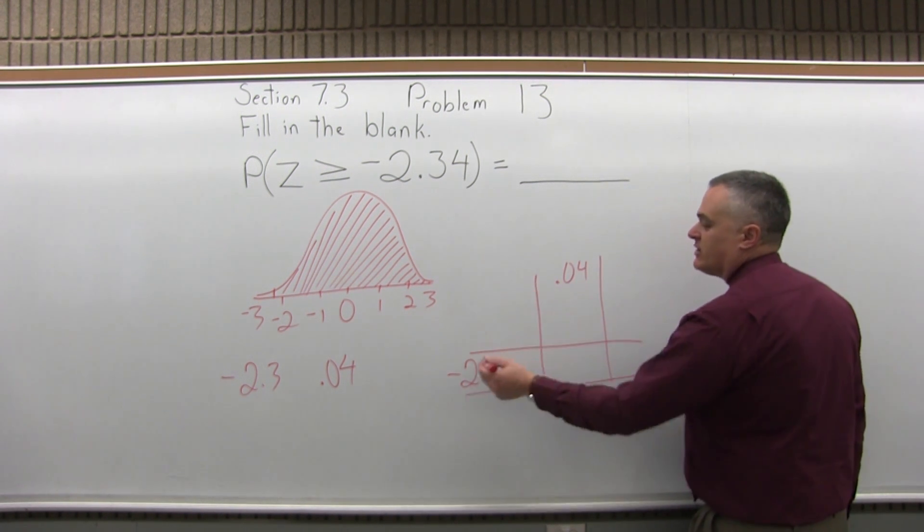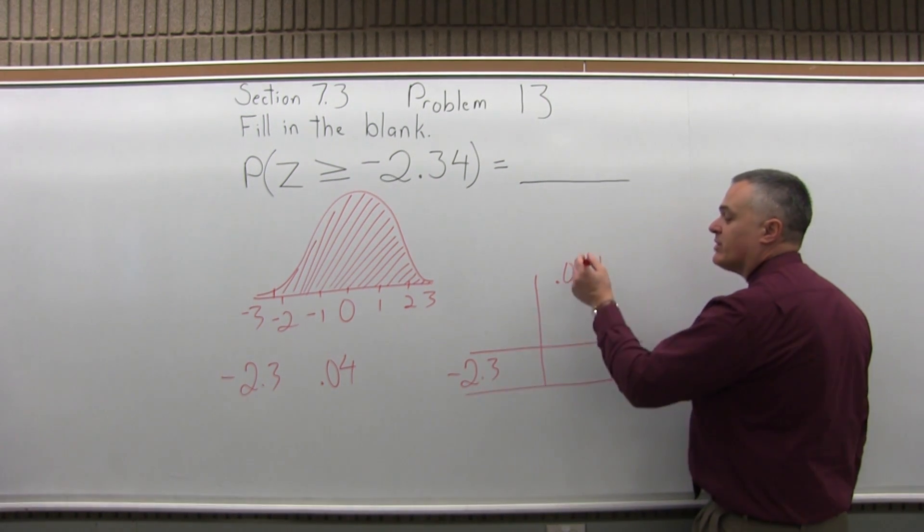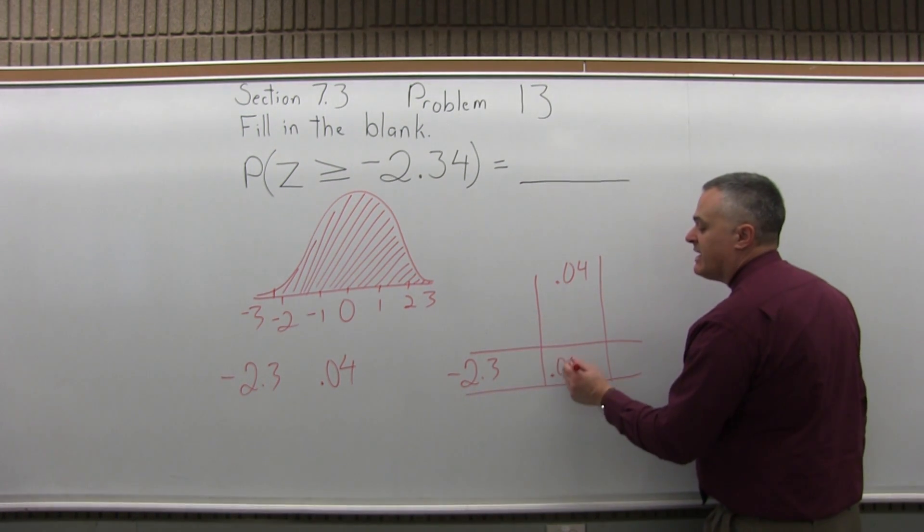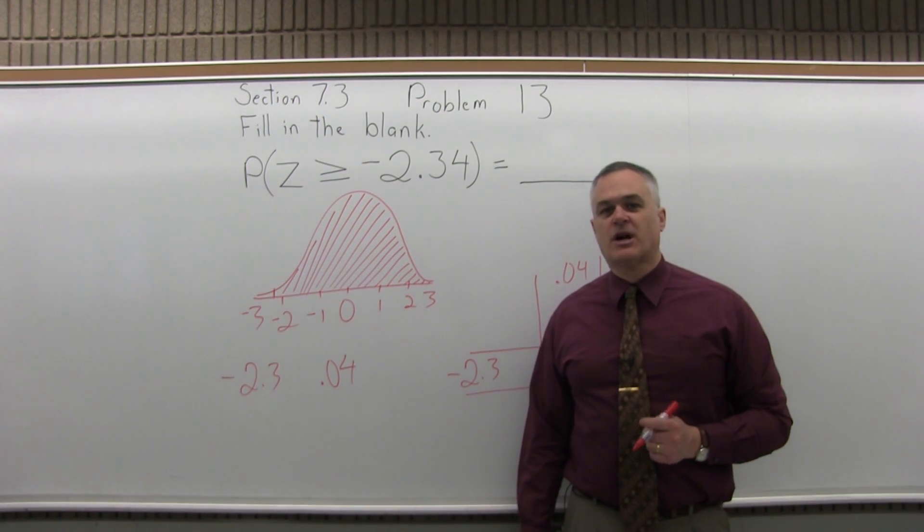And you see where the negative 2.3 row and the 0.04 column intersect, and they intersect at 0.0096. That's the value that you get out of the chart.